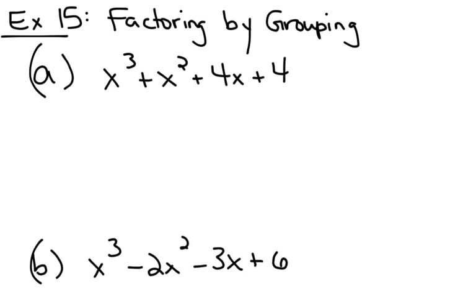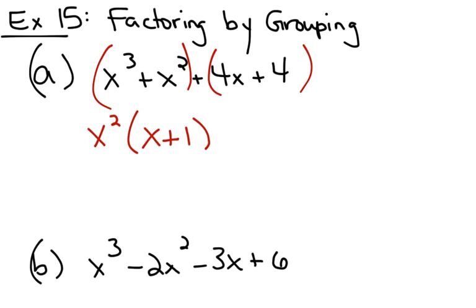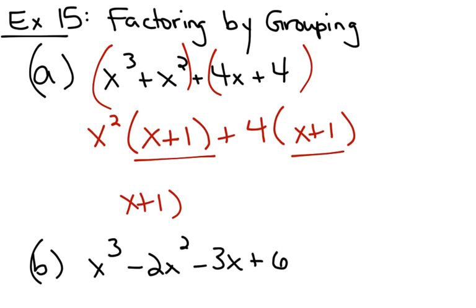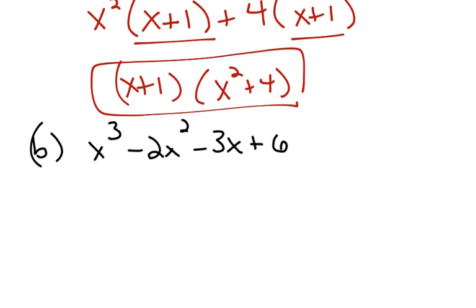The last technique of factoring is called factor by grouping. I actually used factor by grouping earlier when factoring a trinomial of the form ax squared plus bx plus c. Factor by grouping works by grouping the first two terms and the last two terms, then factoring the greatest common factor out of each group. The first group has a greatest common factor of x squared, and you're left with x plus 1. The greatest common factor in the second binomial, 4x plus 4, is 4, and when I factor it out I'm left with x plus 1.